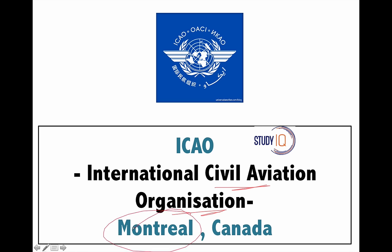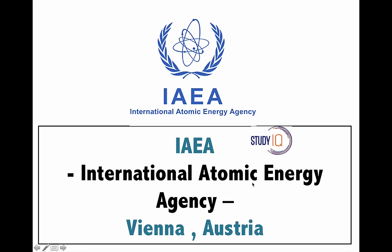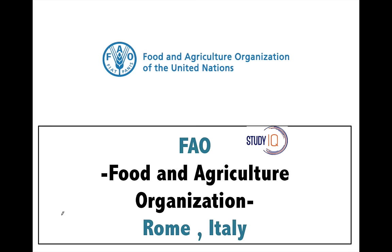Next is ICAO — the International Civil Aviation Organization. Its headquarter is in the beautiful city of Montreal, Canada. Next is the International Atomic Energy Agency — IAEA — which looks after various issues related to nuclear power and atomic energy. Its headquarter is at Vienna, Austria.